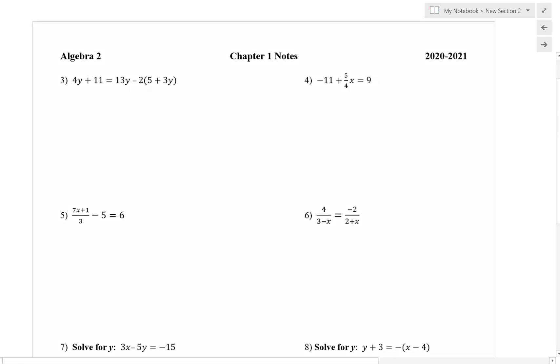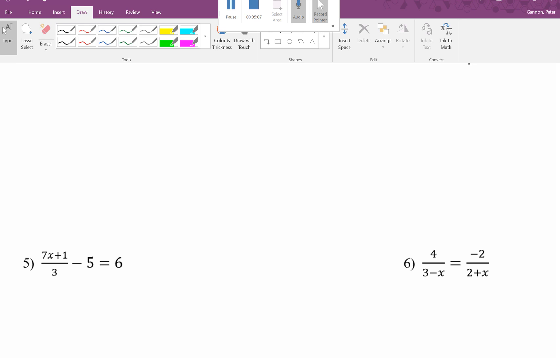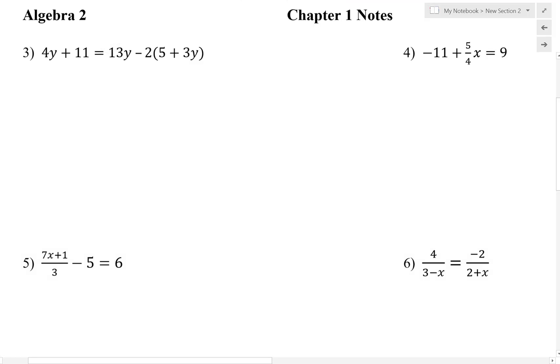Number 3 is kind of an extension of number 2, so let's take a look at that. If we take a look at number 3, same things apply. We want to start by simplifying both sides of the equation. The left-hand side, we cannot simplify, so I'm simply going to rewrite 4y plus 11 equals. On the right-hand side, I'm going to distribute the negative 2. So we have 13y minus 10 minus 6y.